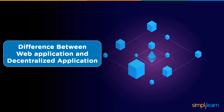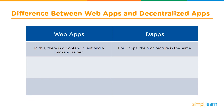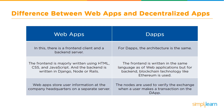But what makes dApps different from other web applications? In web application architecture there is a front-end and a back-end server. The front-end is majorly written using HTML, CSS, and JavaScript, and the back-end is written in Django, Node, or Rails. For dApps, the architecture is the same — the front-end is written in the same languages as web applications — but for the back-end, blockchain technology like Ethereum is used.